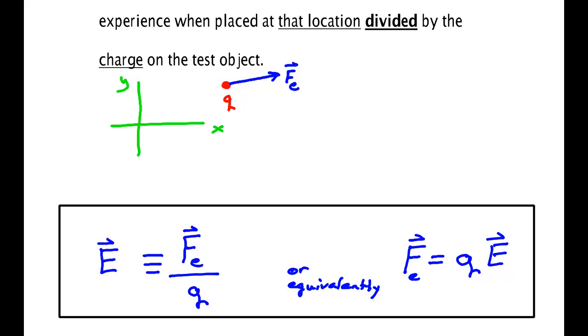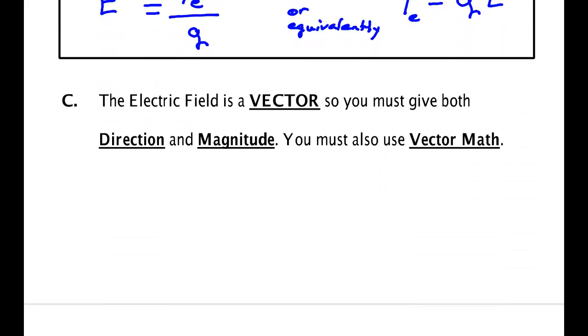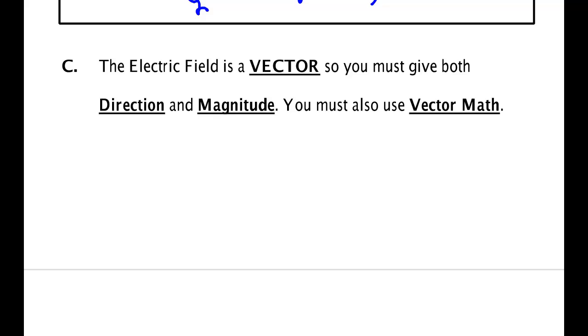Now some important points here. The electric field is a vector, and since it is a vector, you must give both direction and magnitude. This means you must use vector math. When you have a vector, it's going to have some part along the x direction and some part along the y direction.